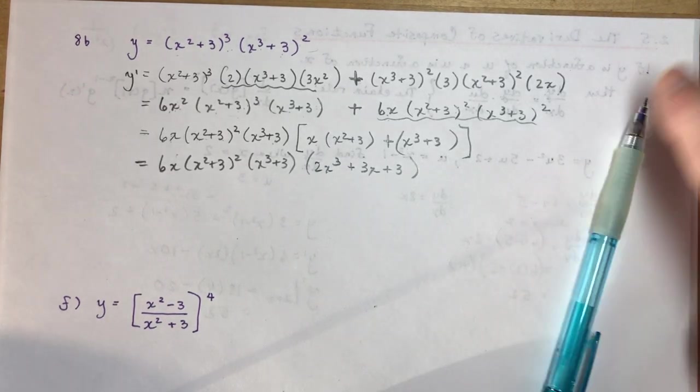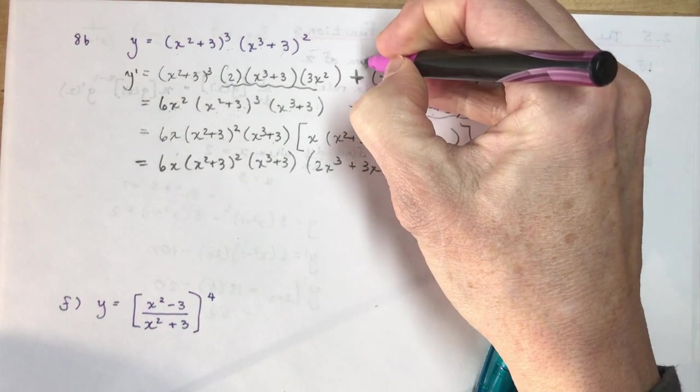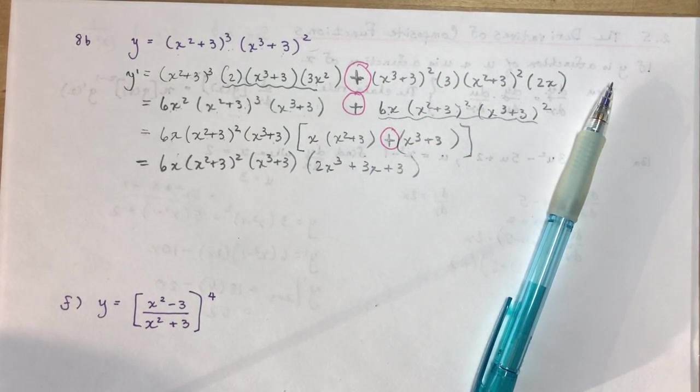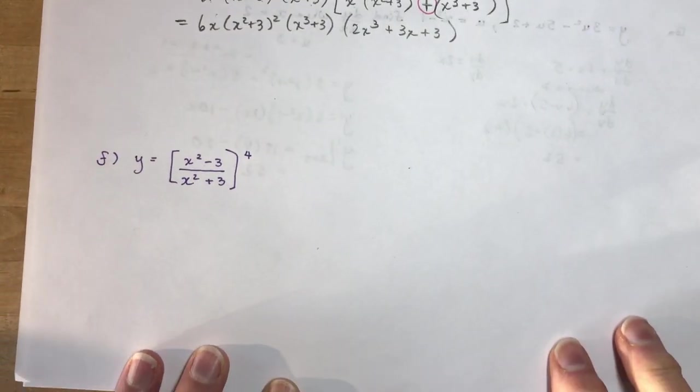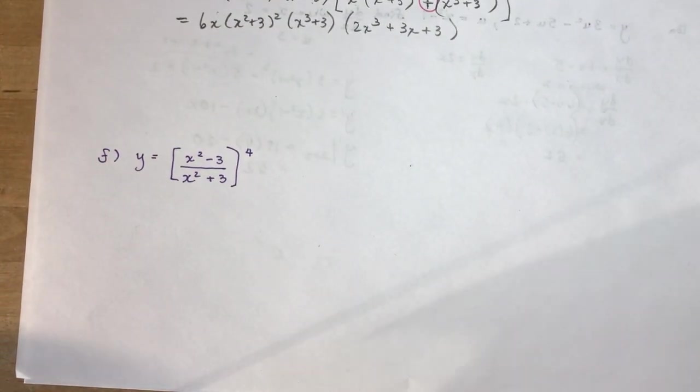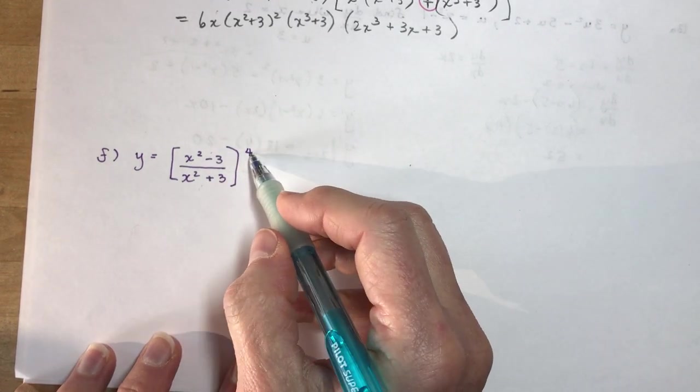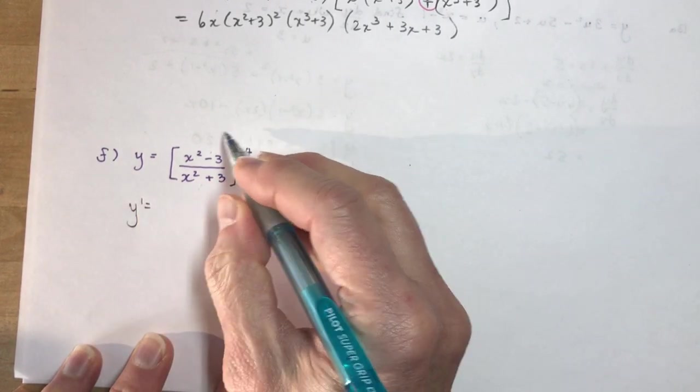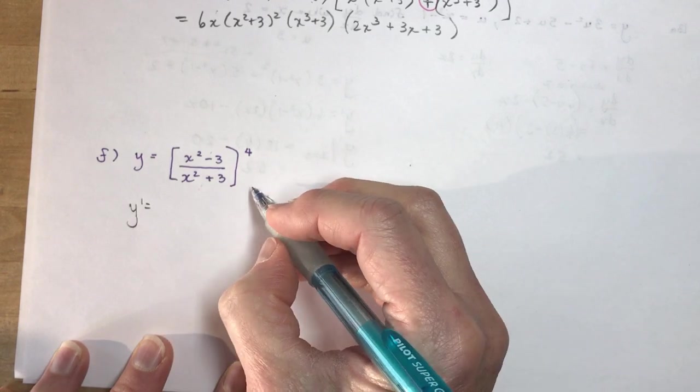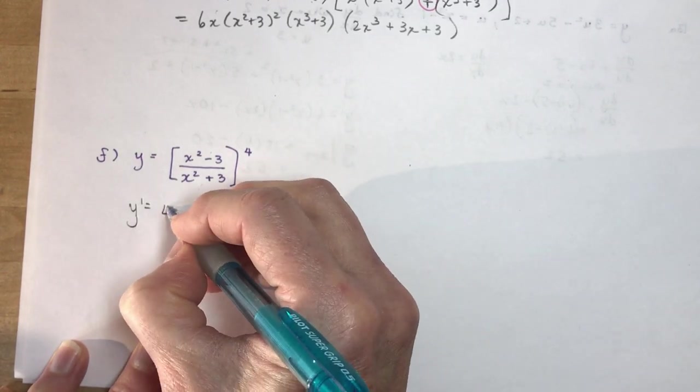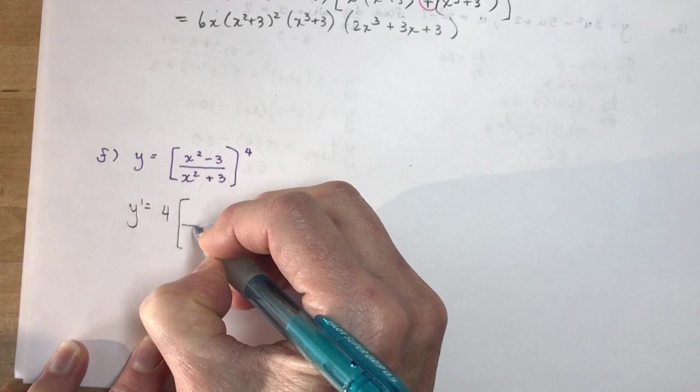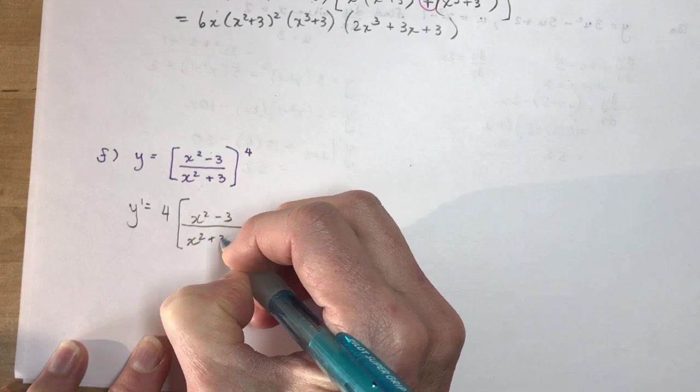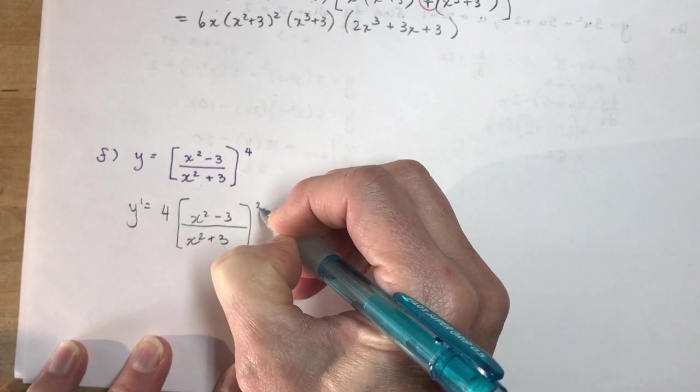Okay, so again the big part you have to be careful about is this plus sign here. Okay, don't lose it along the way. Okay, so let's do one of the quotient rules. More complicated quotient rule because look, I've got all this stuff underneath and I have this to the power of 4. So the power rule for a chain rule or the simplified chain rule says I'm going to put the 4 in front. I'm going to leave everything else alone. (x² - 3)/(x² + 3). I'm going to reduce the exponent by 1.